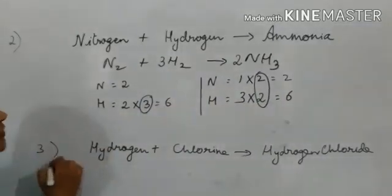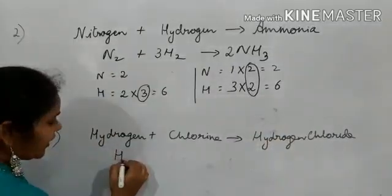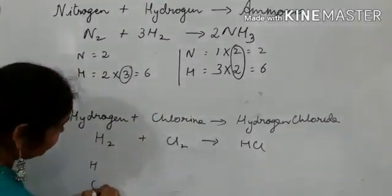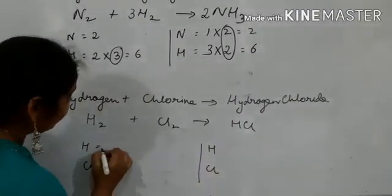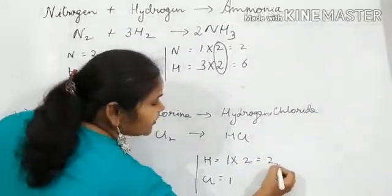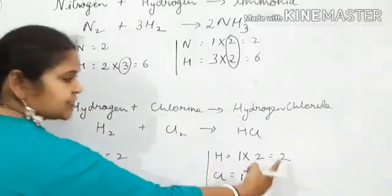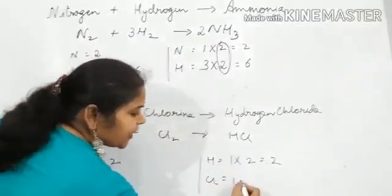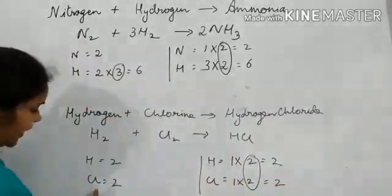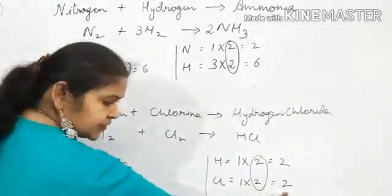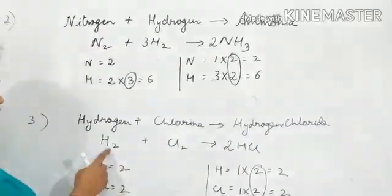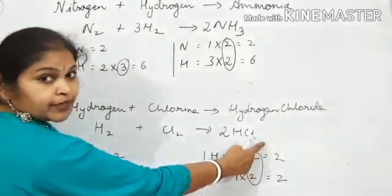The third example: hydrogen in the presence of chlorine reacts to give hydrogen chloride. The equation is H2 plus Cl2 giving HCl. Writing elements hydrogen and chlorine on both sides and tabulating: left side, hydrogen is 2 and chlorine is 2; right side, hydrogen is 1 and chlorine is 1. I multiply HCl on the right with 2, making hydrogen 2. Hydrogen is now balanced on both sides. Since chlorine is also in the same molecule, it automatically becomes 2 on the right, matching the 2 on the left. So I place the coefficient 2 before HCl. Now: 2 atoms of hydrogen and 2 atoms of chlorine on both sides. The equation 2H2 + Cl2 → 2HCl is balanced.